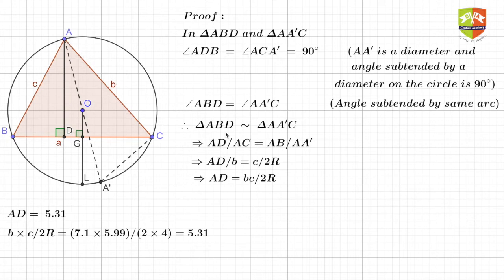Angle ADB, you can see here, is 90 degrees, and angle ACA' will also be 90 degrees. Why? Because AA' happens to be the diameter, and a diameter subtends an angle of 90 degrees at any point on the circle. So this we know. Since both of them are 90 degrees...